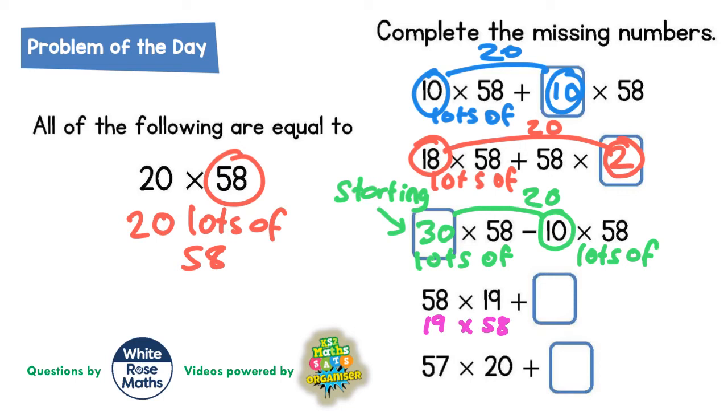So what we're basically saying is that 58 lots of 19 is the same as 19 lots of 58. Well, if we've got 19 lots of 58, to get 20 lots of 58 we would have to add on an extra lot of 58.